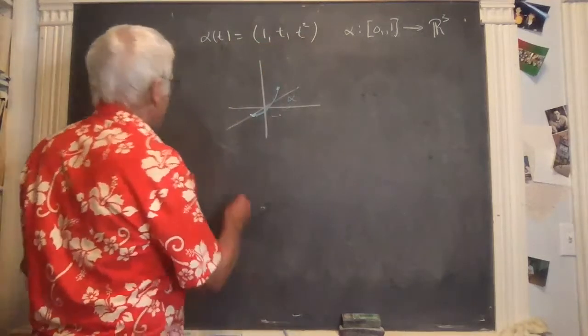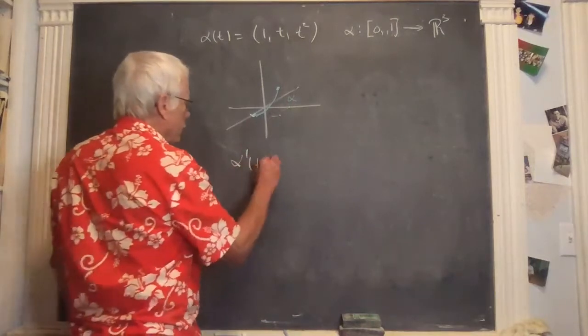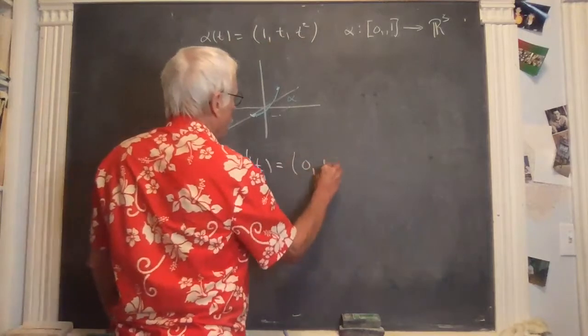So maybe if this was a firefly, this would be the track of the light of that firefly. And the firefly would actually fly according to this equation. Now that firefly has a velocity at any point. I like ladybug. Let's use ladybug. So that ladybug has a velocity at any time, which is given by (0, 1, 2t).